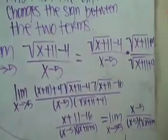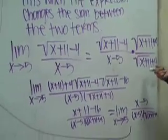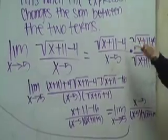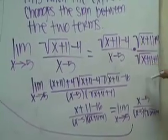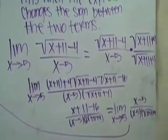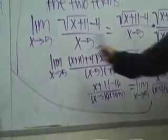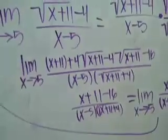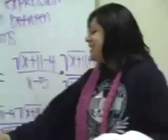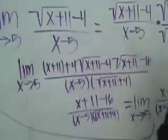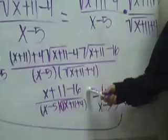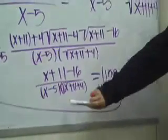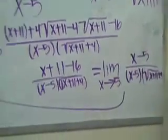You have to multiply by the conjugate of the numerator, which is the square root of x plus 11 plus 4, over the square root of x plus 11 plus 4. Then you solve and break down the problem, and it becomes x plus 11 minus 16 over x minus 5 times the square root of x plus 11 plus 4.